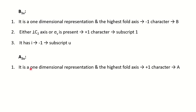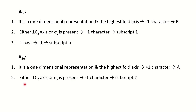For A2u: again one-dimensional representation; highest fold axis has plus one character, so symbol A. For subscript 2, either perpendicular C2 axis or sigma v has minus one character. And finally, u is for minus one for the center of symmetry, giving subscript u. This question is taken from BCU MSc paper. This is how you can find and write down the answer for such kinds of questions.